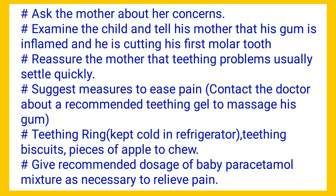Mrs. Maria, you can also give him a piece of apple to chew. Giving all these things will help his gum to erode and the teeth to come up. To recap: there is a teething ring which you can keep in the refrigerator, teething biscuits he can bite on so the gum will erupt and teeth will come out, and please give him a piece of apple to chew. All of these will help his gum to erode and the teeth to come up.